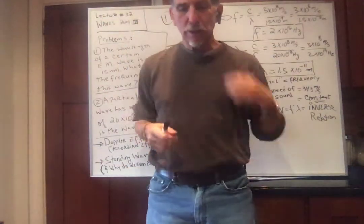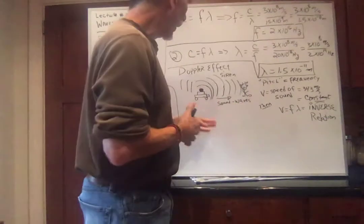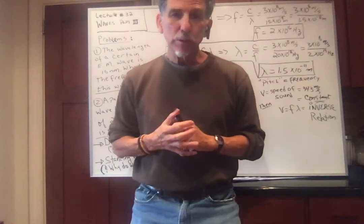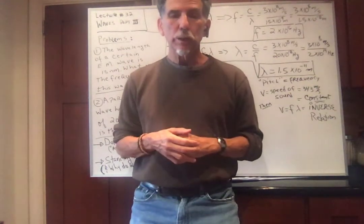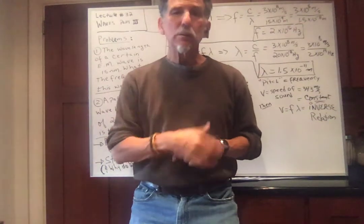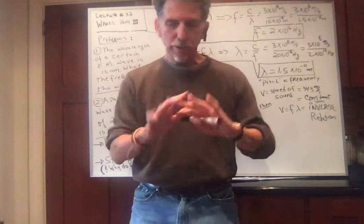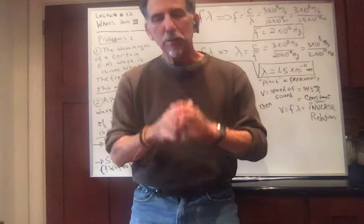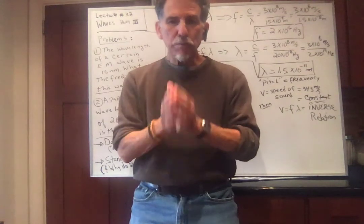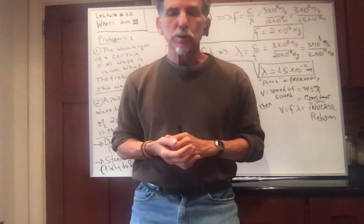Let's get to two topics. One is the Doppler effect, and I'm sure you've all heard of this. When you watch the weather or police radar, it all deals with the Doppler effect. I call it an accordion effect because it's like a squeezing or spreading of waves. For sound waves, the speed of sound is approximately 343 meters per second — pretty much a constant. So V equals frequency times wavelength, giving us that inverse relation once again.